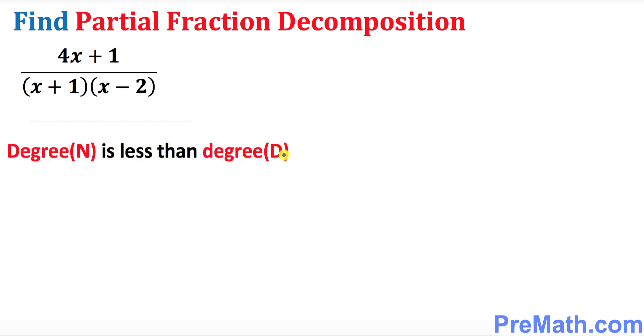The very first observation is that the degree in the numerator is indeed less than the degree in the denominator. And the second observation is that we have linear factors in the denominator.